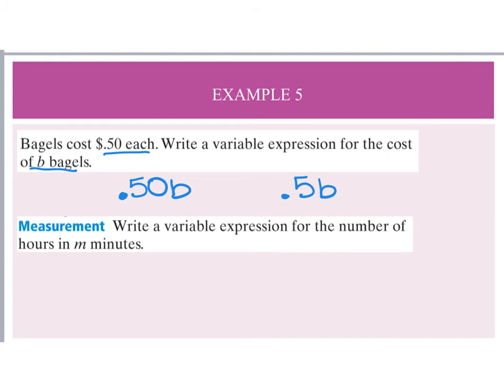The next part says write a variable expression for the number of hours in m minutes. We know there are 60 minutes in one hour, so if I have m minutes, I divide m by 60 to find how many hours there are — giving m divided by 60.